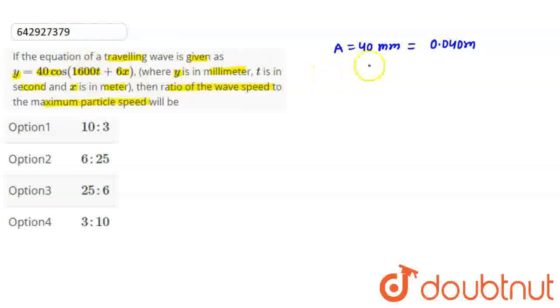This is omega, which is 1600 radian per second, and this is k, which is 6 meter inverse.